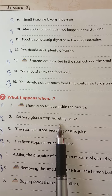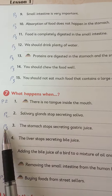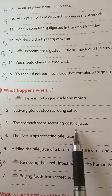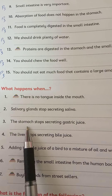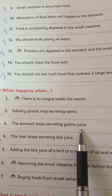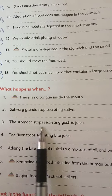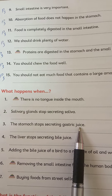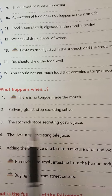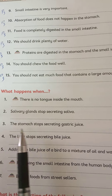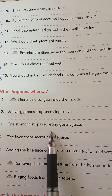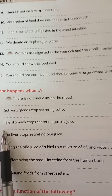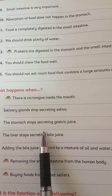Number three: the stomach stops secreting gastric juice. What happens when the stomach stops secreting gastric juice? The protein can't be digested into a semi-liquid substance.